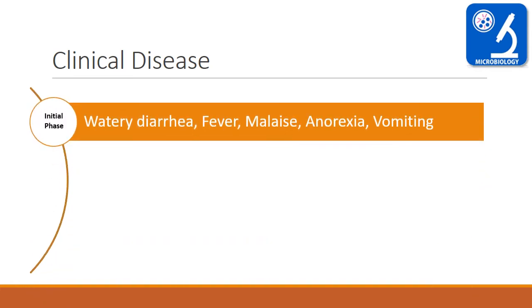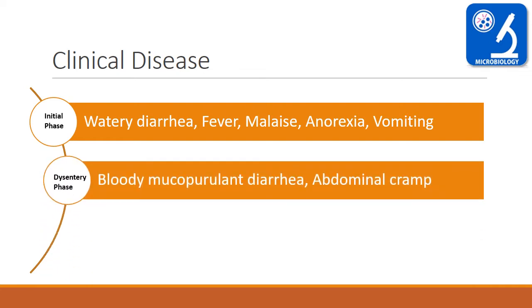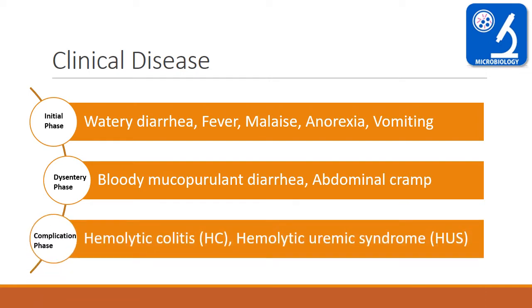Now the clinical disease. There are a few phases. The first is the initial phase, where the patient presents with watery diarrhea, fever, malaise, anorexia, and vomiting. Then there is the dysentery phase, where the patient comes with bloody mucopurulent diarrhea and increasing abdominal cramps. This dysentery can be complicated and lead to hemorrhagic colitis and hemolytic uremic syndrome.